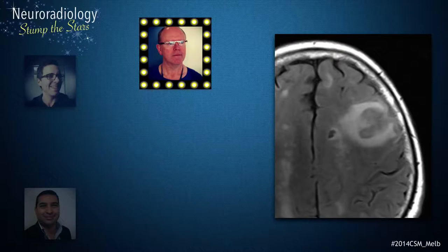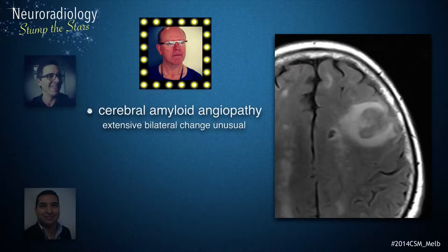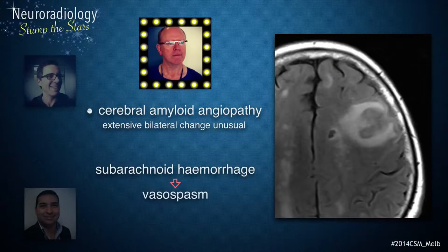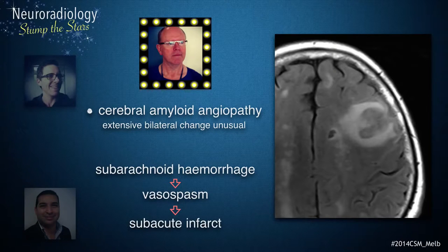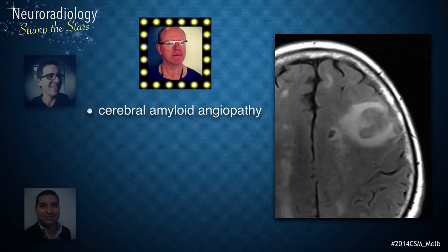The superficial staining of the cerebral cortex and sulci with haemosiderin is key to narrowing the differential. While this can occur with amyloid angiopathy, such extensive bilateral change would be unusual. We have seen patients presenting in a delayed fashion after subarachnoid haemorrhage with vasospasm and subacute cerebral infarction, which could be further investigated on MRA and history. Putting it all together, amyloid angiopathy with prior haemorrhages or a vasculitis would be my favourite diagnosis.